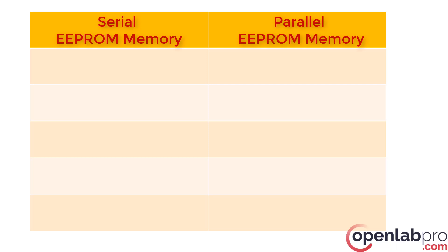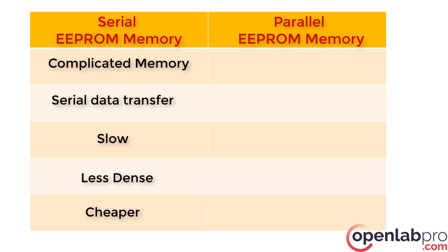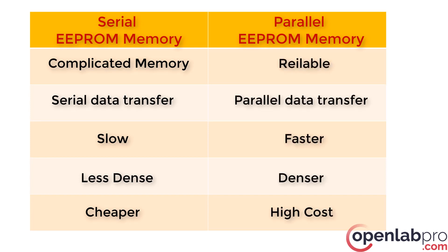There are two main types of memories available from the family of EEPROM memory devices: Serial EEPROM memory and Parallel EEPROM memory. The operation of Serial EEPROM memory is complicated and data is transferred serially. This makes them slow as compared to Parallel EEPROM. Also, Serial EEPROMs are less dense and are much cheaper than Parallel EEPROM memory.